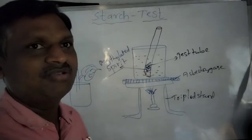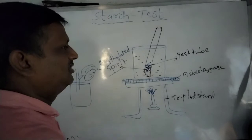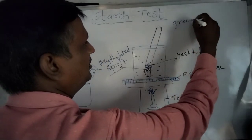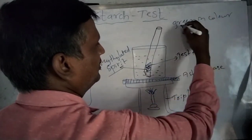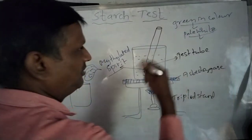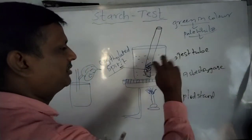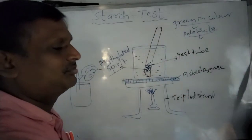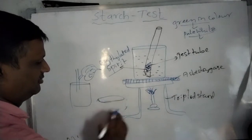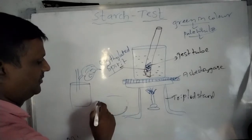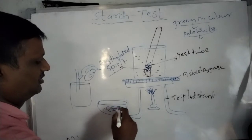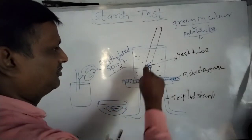The leaf is boiled again for some more time in the methylated spirit. After some time, we can observe that the green color leaf turns into pale white in color. When the leaf turns pale white, it should be carefully taken out with the help of a brush and spread on a petri dish.